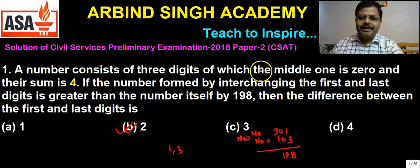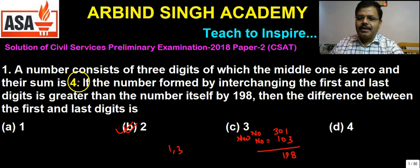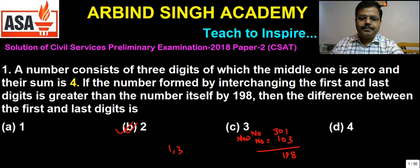This is an easy question that can be solved without any calculation. The sum of digits is 4, so there are only two possibilities: digits are either 2 and 2, or 1 and 3. But 2 and 2 is rejected because interchanging those digits won't produce a different number. Therefore the digits are 1 and 3, and the answer is 2.